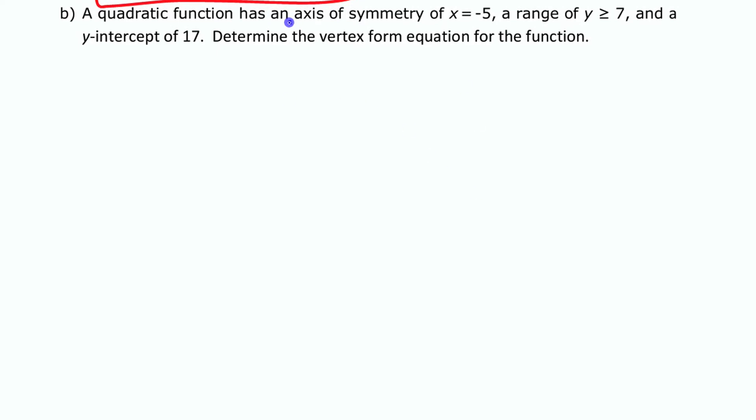For this, we have an axis of symmetry of x equals negative 5, and a range of y is greater than or equal to 7, and a y-intercept of 17. So let's think about what all of that means here. All we know about axis of symmetry is that we have somewhere here at negative 5. We know that at 7, we'll put 7 right there, it says y is greater than or equal to 7. That actually tells you where your vertex is because we know that it's going up from there, and the vertex is on that axis of symmetry, so it's got to be there, and then it's opening up from there, so we have just a rough sketch looking like that.